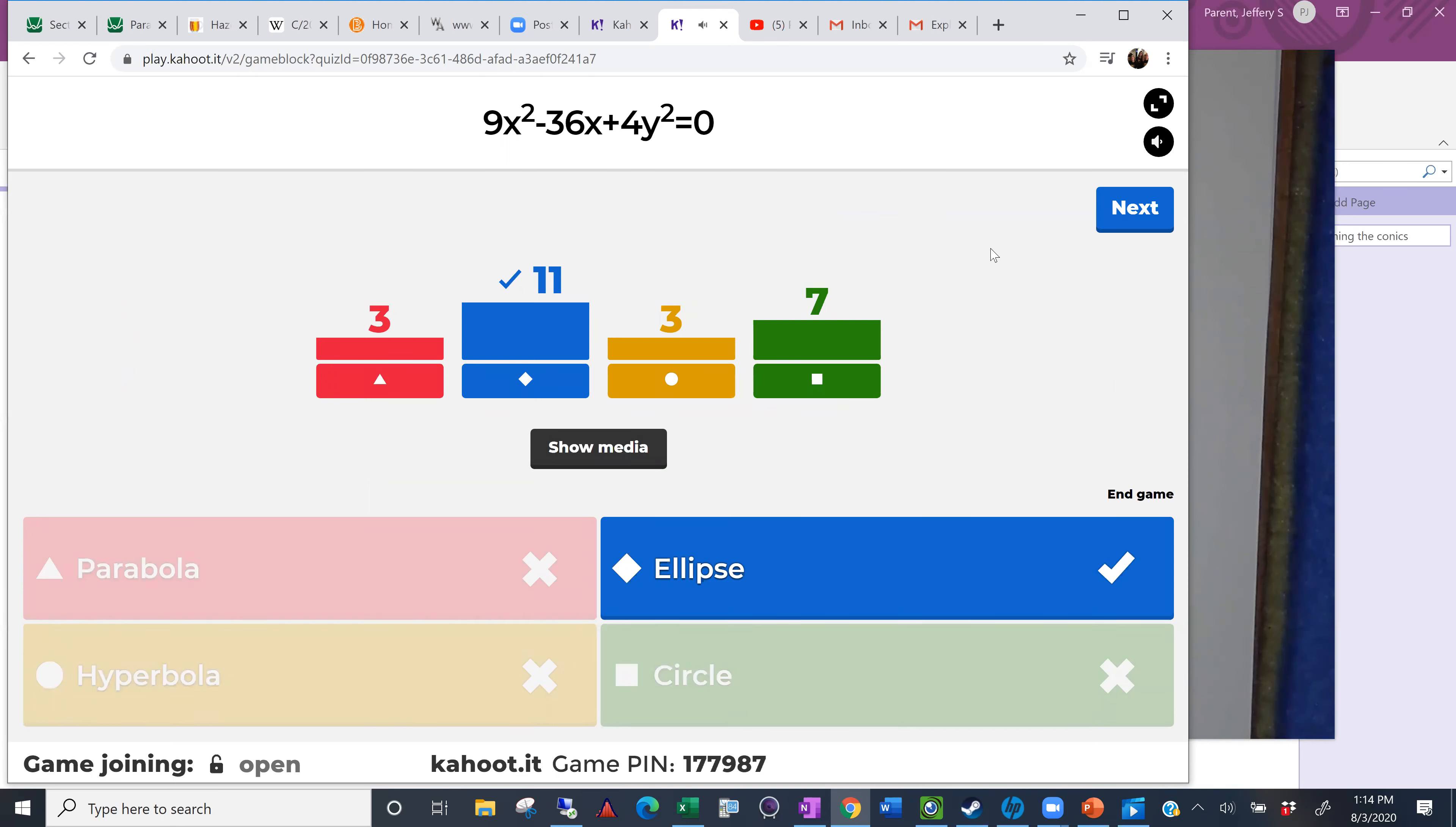Eleven for the ellipse. Let's take a look at this one. It's 9x squared minus 36x plus 4y squared. Right away you can eliminate a parabola because you've got two squared terms. But the squared terms are both positive. So, what does that eliminate? That eliminates a hyperbola. If they had opposite signs, then it'd be a hyperbola. Because these coefficients are different, they're not both 9 or both 4, it's not a circle. So, by default, we run through everything else. It's an ellipse.